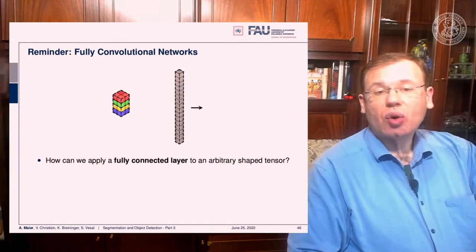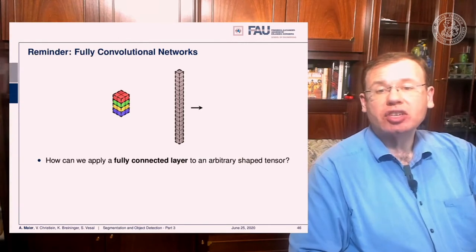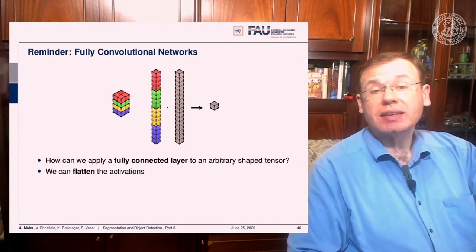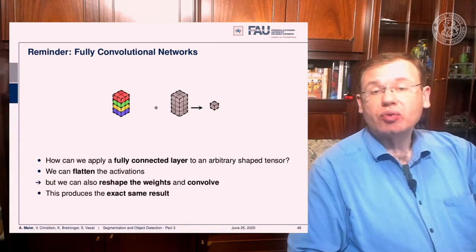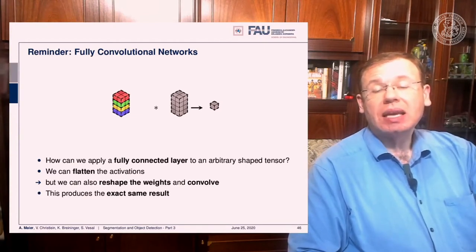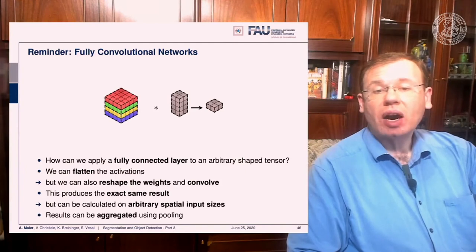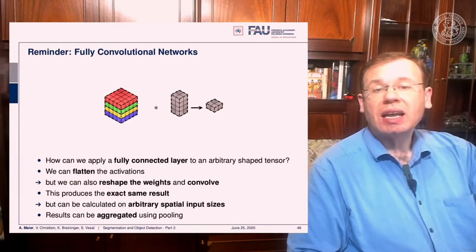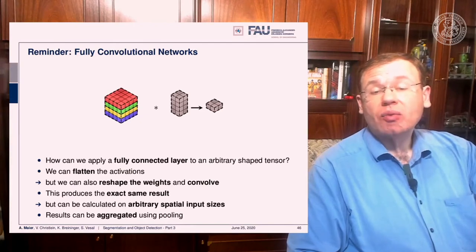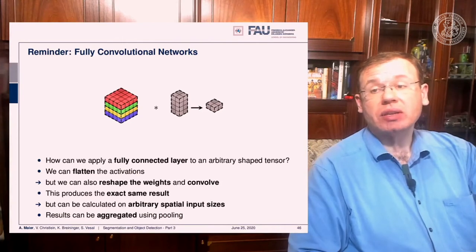The key idea is how to apply a fully connected layer to an arbitrarily shaped tensor. You can flatten the activations, run your fully connected layer, and get one classification result — or you can reshape the weights and use convolution to produce exactly the same result, as we discussed with one-by-one convolutions. With convolutions, you can work with arbitrarily shaped spatial input sizes and produce a larger output, effectively replacing the sliding window, though you still need to handle multiple scales.